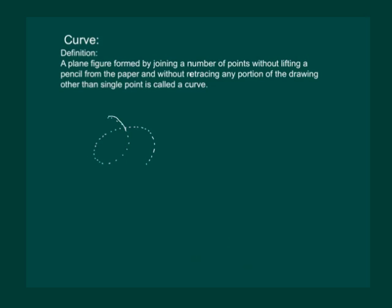For instance, without lifting the pencil we can join these points. So this will be a curve. But consider this set of points. Let us try to join them without lifting the pencil. We start from some point and we join them. Now can I join the second circle without lifting the pencil?